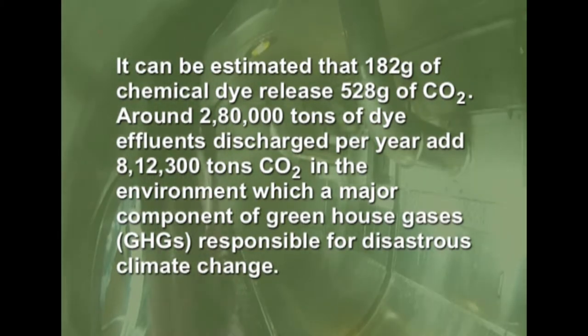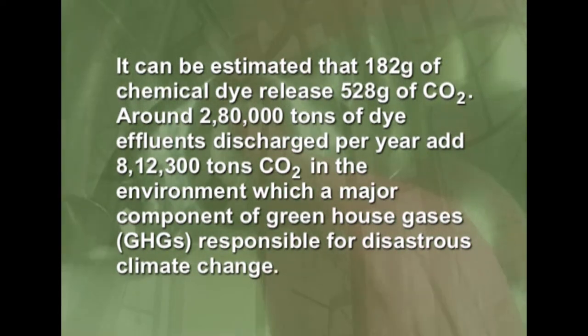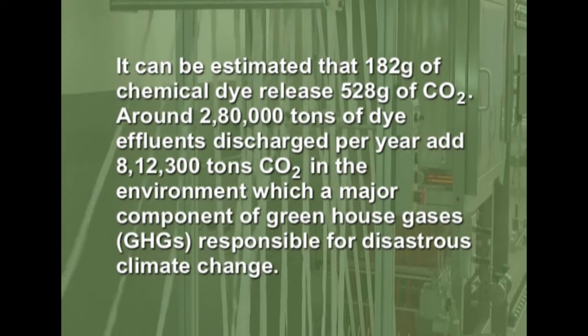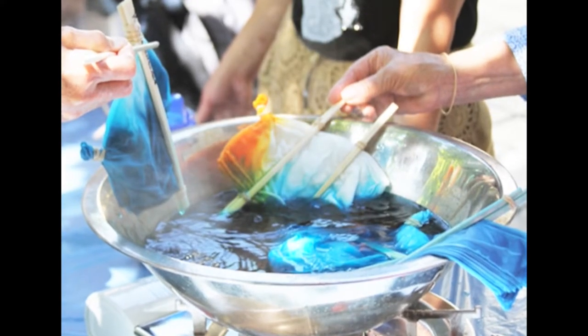It can be estimated that 182 grams of chemical dye releases around 528 grams of carbon dioxide — around 2,80,000 tons of dye effluents discharged per year and around 8,12,300 tons of carbon dioxide in the environment, which is a major component of greenhouse gases responsible for disastrous climate change. German legislation in 1995 led to the ban of synthetic azo dyes for manufacturing, dyeing, and importing textiles. Other European and Asian countries including India have also banned the manufacture and use of azo dyes. This move has created unstinted demand for natural dye products as researchers look for eco-friendly products and technologies.